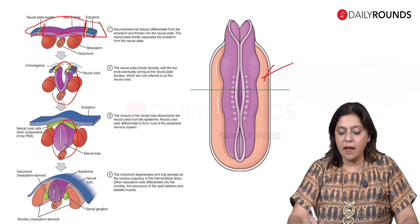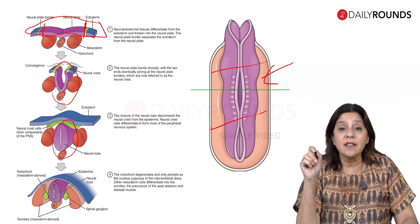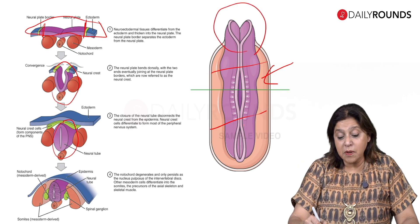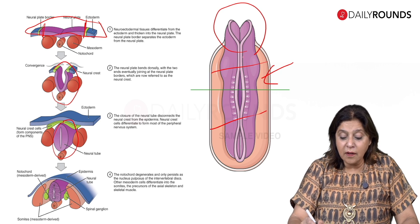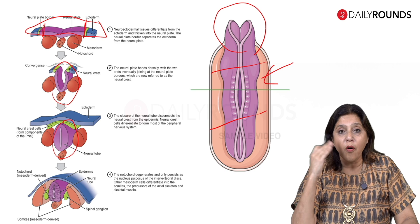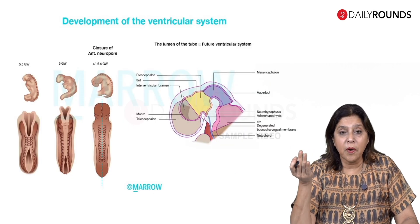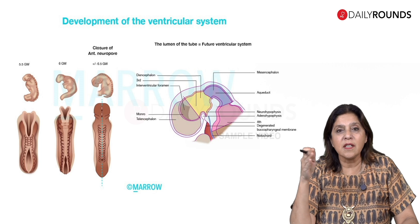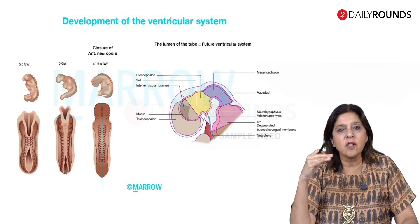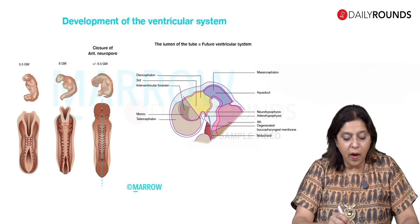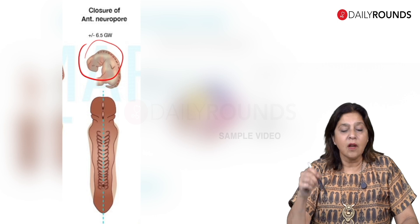While the spine is zipping up, at the top end, the primary vesicles of the brain are also forming simultaneously. In embryology, many things happen at the same time, even though for learning we tend to approach them sequentially. The neural tube develops different bulges, forming three primary vesicles: the prosencephalon (forebrain), the mesencephalon (midbrain), and the rhombencephalon (hindbrain).